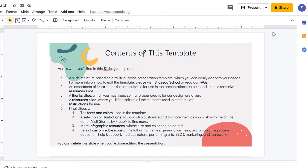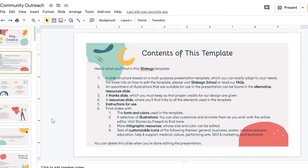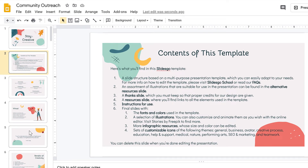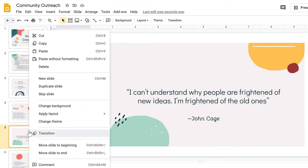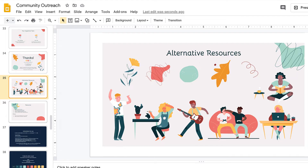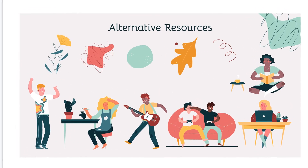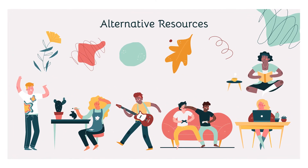Make a copy of a slide is super useful if you want to reuse the layout on another slide. Right click on the slide you want, then Duplicate Slide. Some templates come with alternative resources to give you options that match the design. I can choose any of these illustrations by copy and pasting them to another slide.